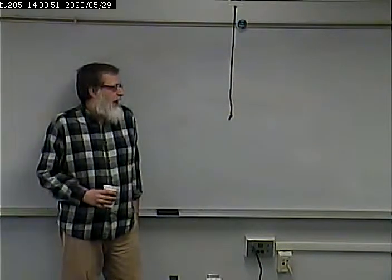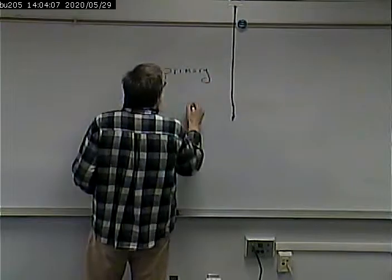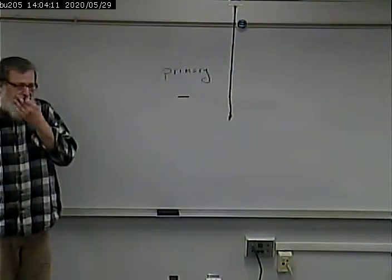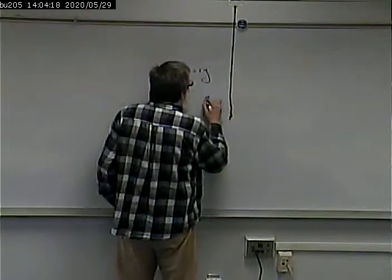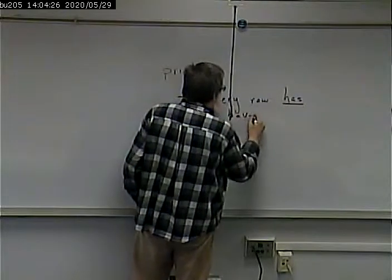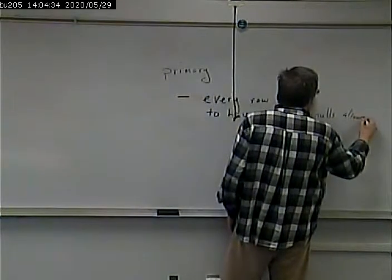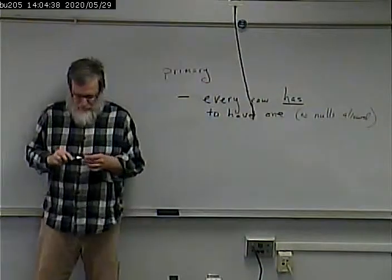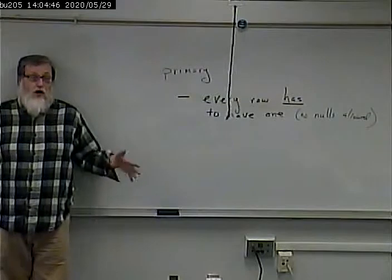You're right, we didn't really talk about that. We talked about primary keys, and you should get the idea that the primary key is pretty important. Remember the role of a primary key in a table — it has two characteristics. One is that every row has to have one. No nulls allowed. Nulls are sort of like empty values — they're different from zero and different from spaces. They're like no value at all.